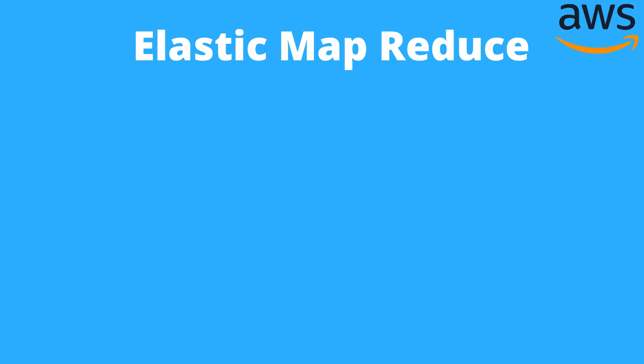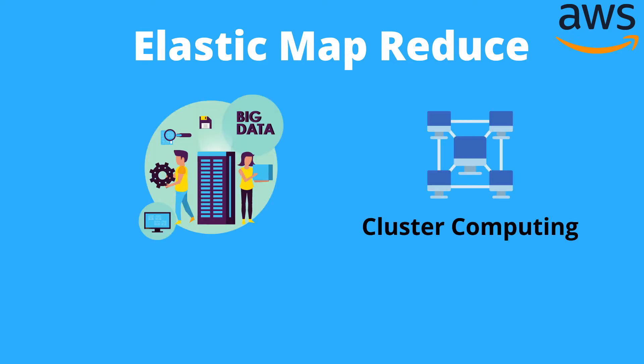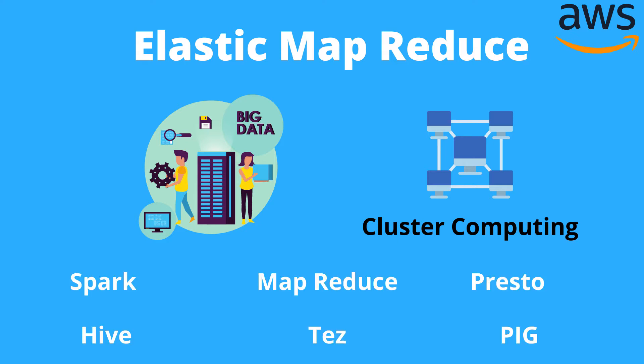EMR stands for Elastic Map Reduce. It's a service provided by AWS that operates as a big data platform. It involves cluster computing and provides big data engines such as Spark, Hive, Tez, Presto, and even older ones like Pig and MapReduce. EMR is an involved service where you can actually SSH into the cluster if you want to and you're in control of the infrastructure. AWS will spin it up for us but then we have fine-grained control over what's going on.